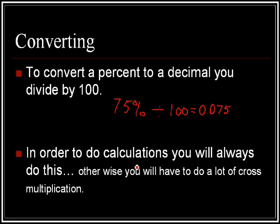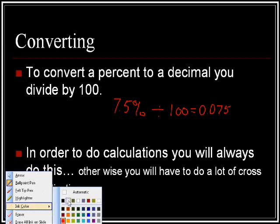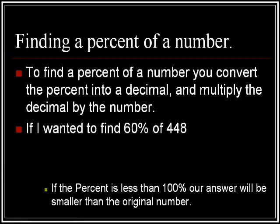You do this in order to do calculations, and you will almost always do this. Otherwise, your other choice is to do cross multiplication, and that involves a few more steps and a much better chance that something's going to go wrong. Put in the simplest terms, you want to find the percent of a number: convert the percent into a decimal, and then multiply the decimal by the number.